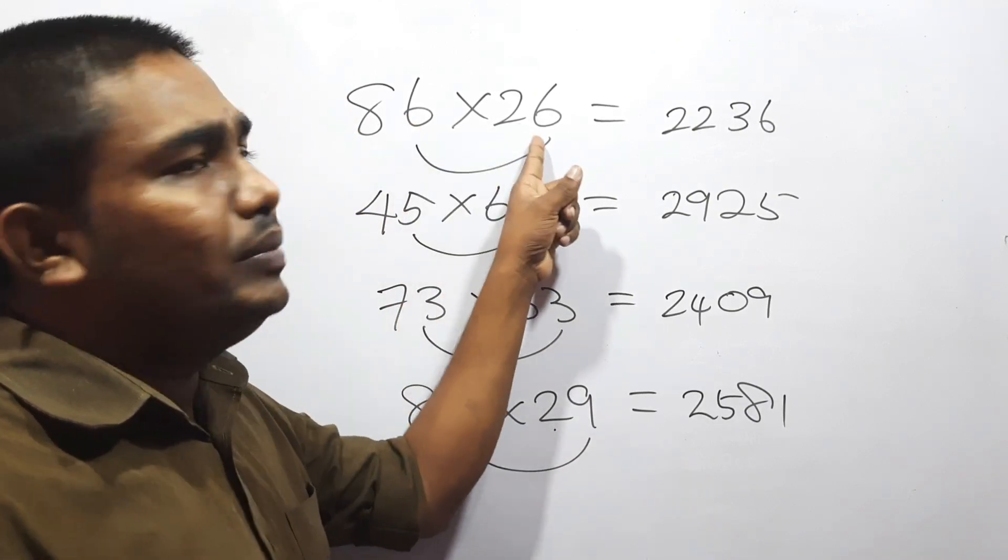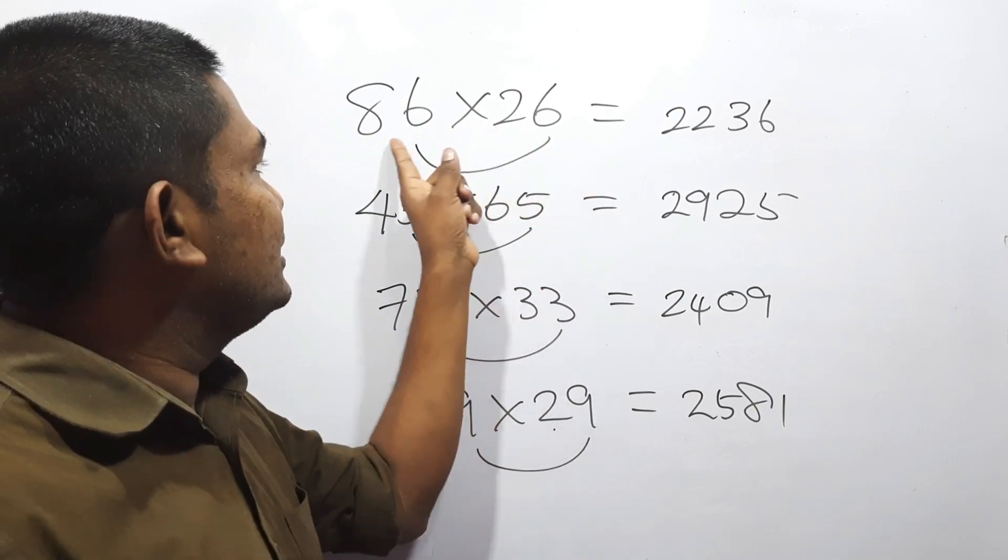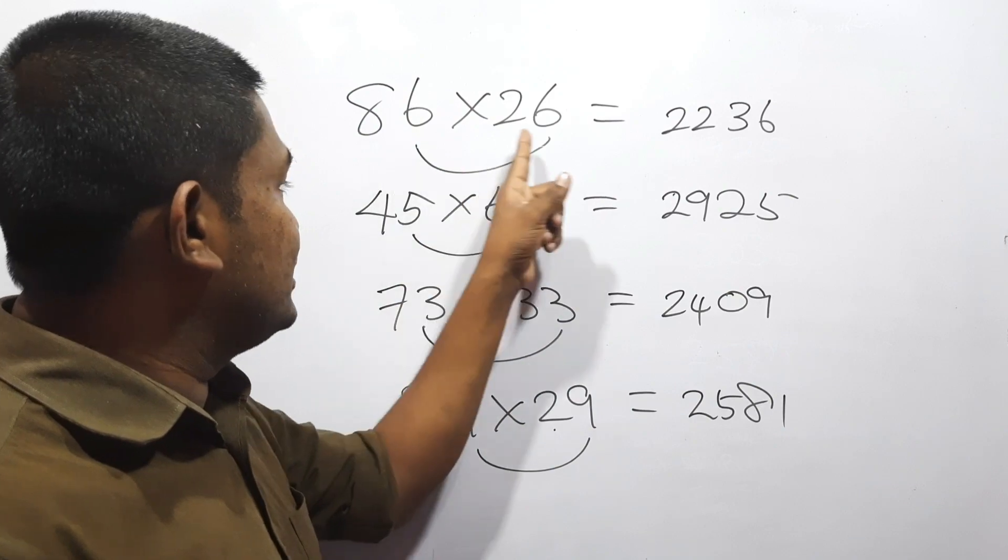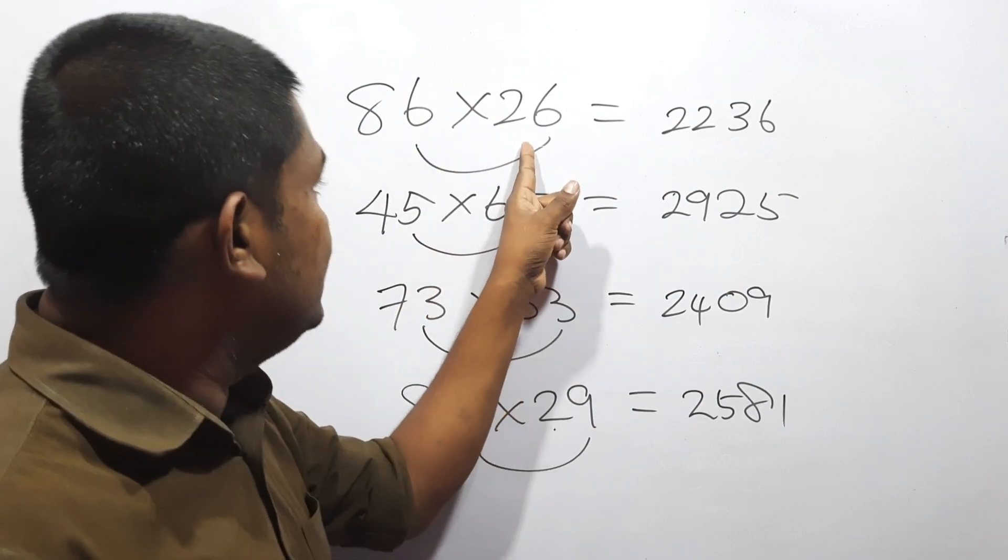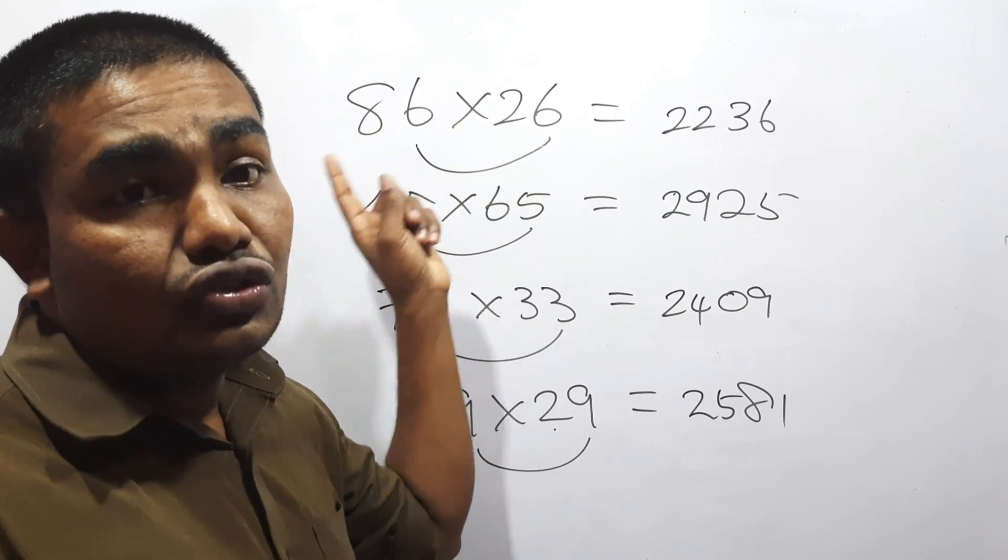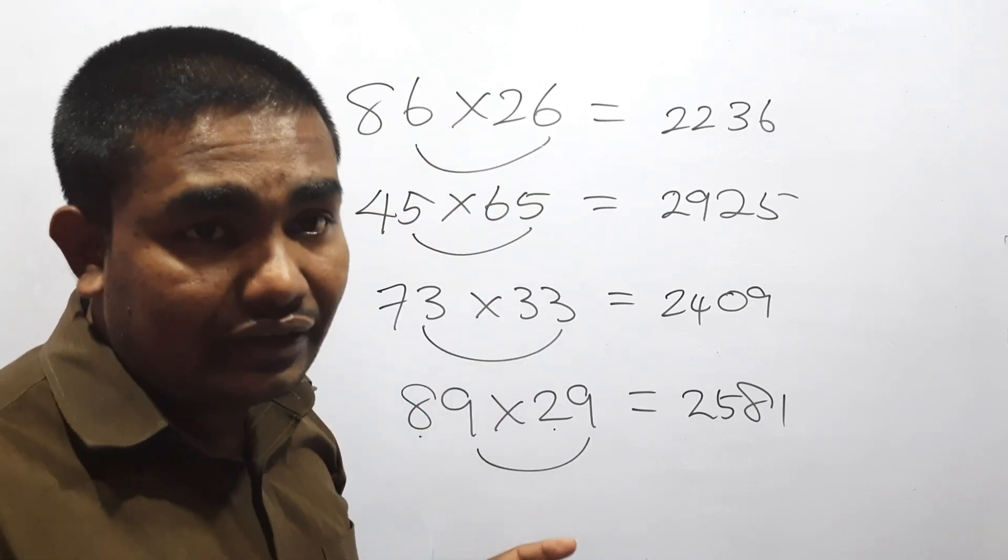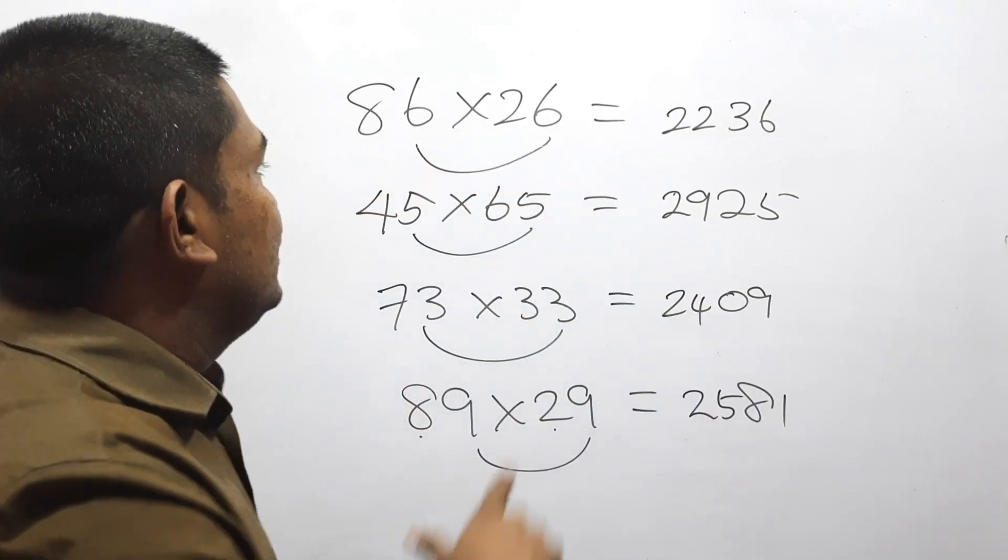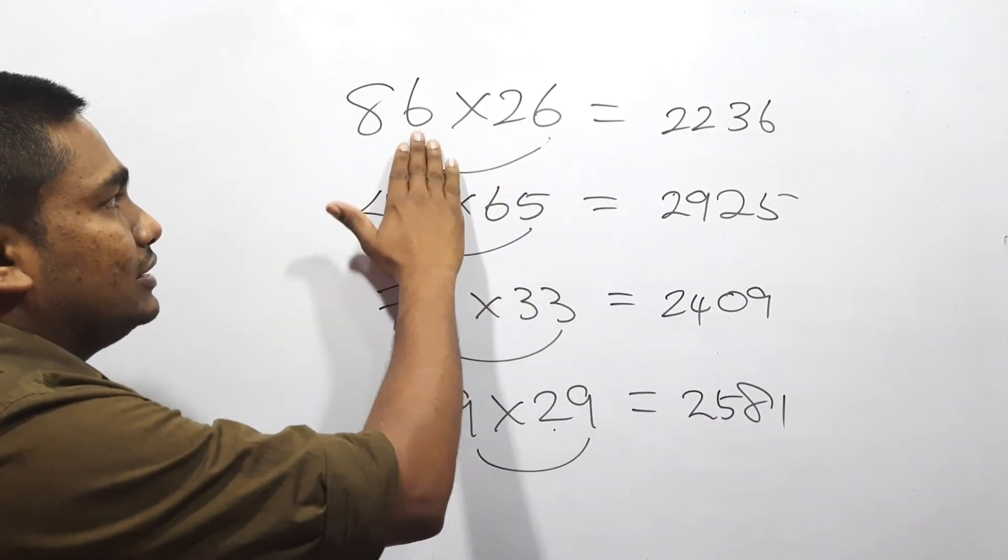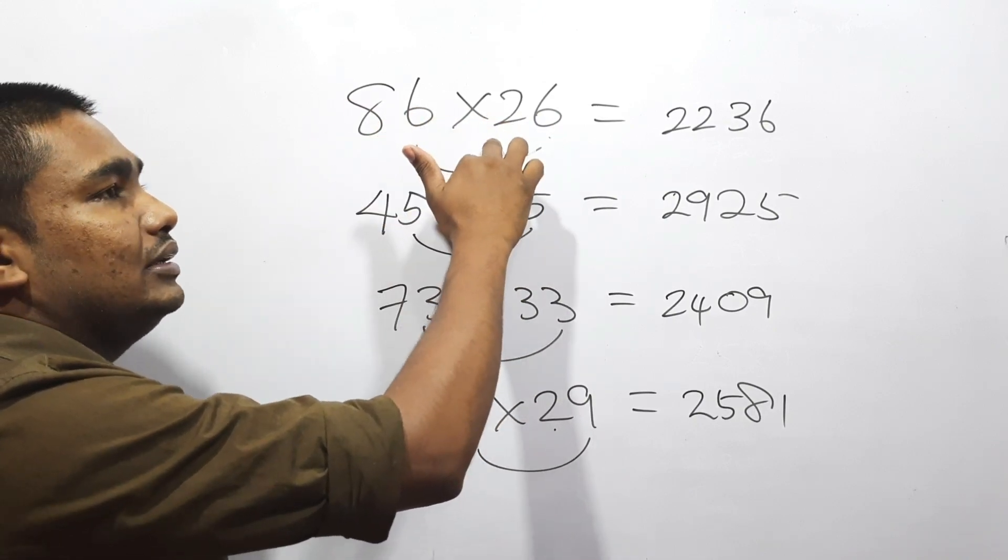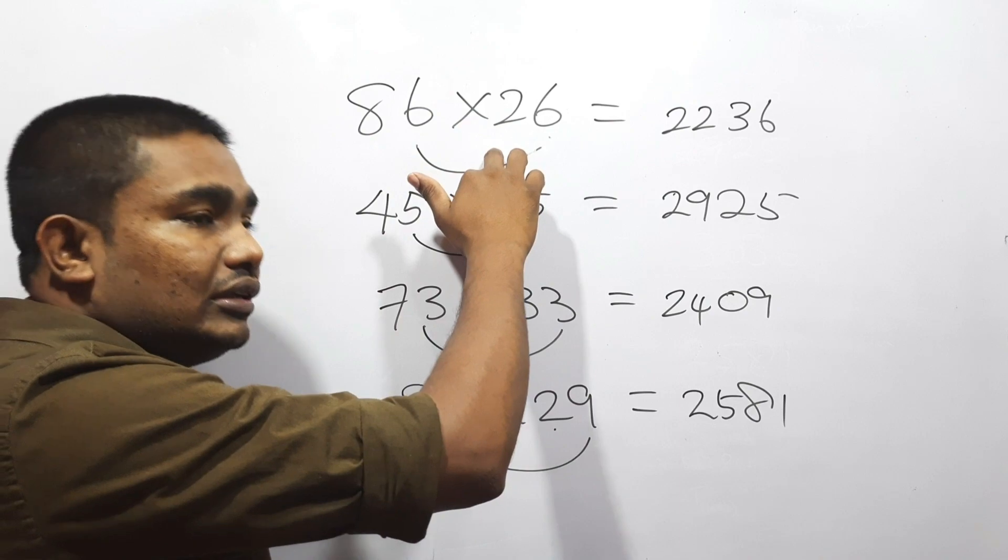The unit place numbers should be same, and the sum of tens place numbers should be equal to 10. If this is happening, we can use this method.